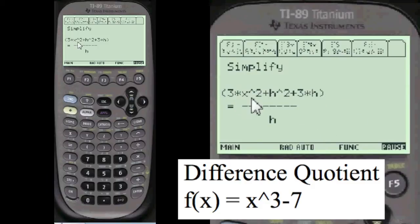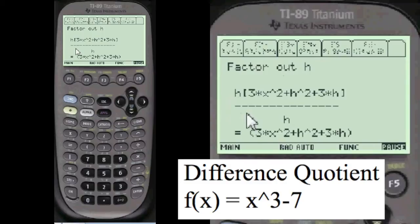And we simplify. We get this right here. And over h. We factor out the h. Here's the h here. We divide those out. We get this right here.